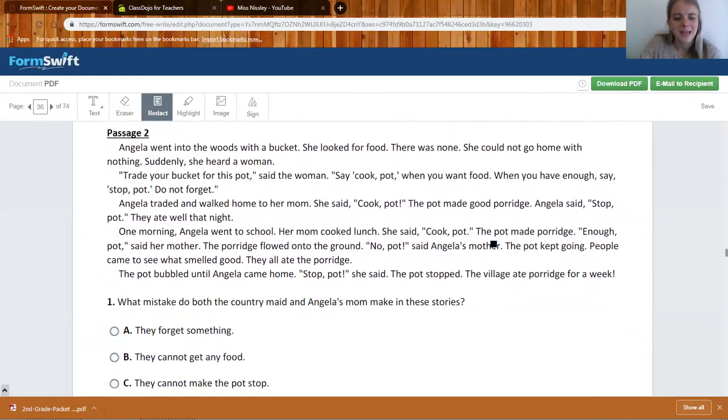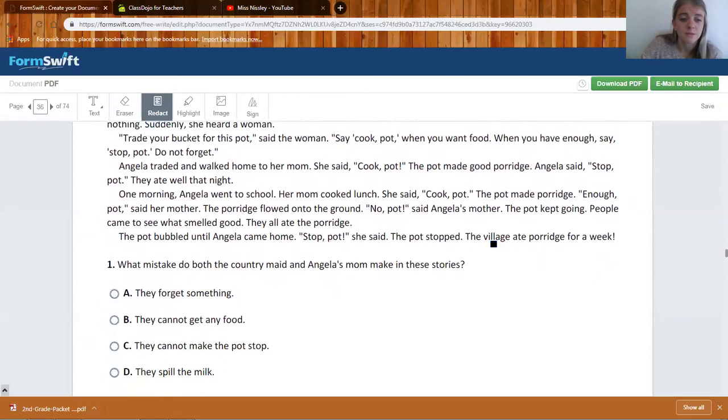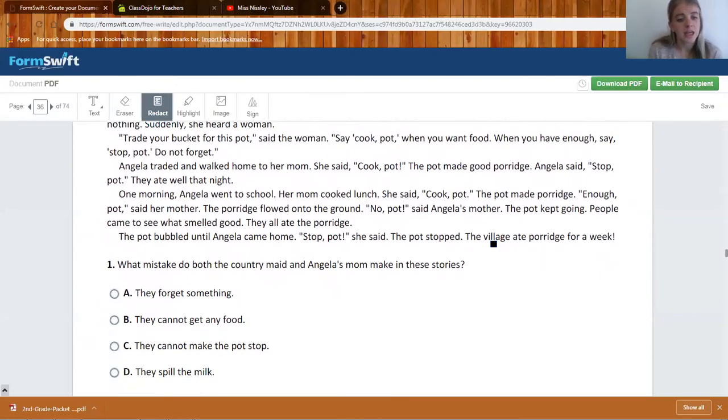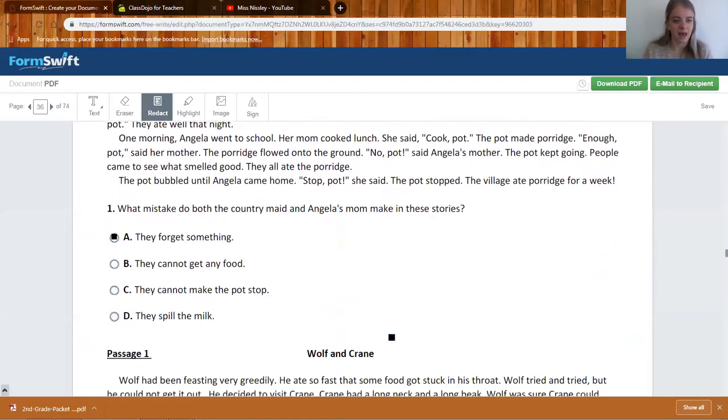Number one says what mistake did both the country maid and Angela's mom make in these stories. They forget something. They cannot get any food. They cannot make the pot soup or they spill the milk. In both stories if we're comparing them, they both forget something because the country maid forgot the milk on her head and Angela's mom forgot to say stop pot. So you should have marked A.